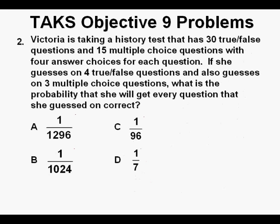Problem 2. Victoria is taking a history test that has 30 true-false questions and 15 multiple-choice questions with four answer choices for each question. If she guesses on four true-false questions and also guesses on three multiple-choice questions, what is the probability that she will get every question that she guessed on correctly? This is a problem similar to problem 1 where there are multiple independent events — four true-false questions and three multiple-choice problems. We can multiply all these probabilities together to find our answer.